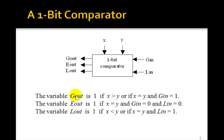Now the variable Gout is going to be 1 if x is greater than y, that is, if x is 1 and y is 0. Or if x is equal to y, then Gout will be equal to Gin.